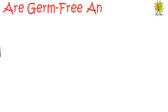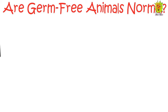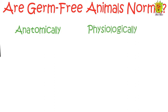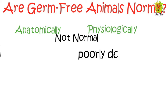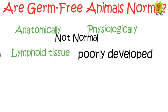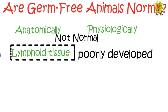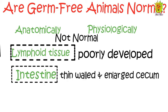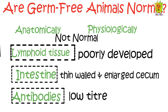Now let's see whether germ-free animals are normal or not. If you examine a germ-free animal anatomically and physiologically, you will find that these animals are not normal. They have poorly developed lymphoid tissue — the tissue that plays an important role in the immune system. Their intestine is also thin-walled, they have an enlarged cecum (part of the large intestine), and the antibodies present in these animals are very low.